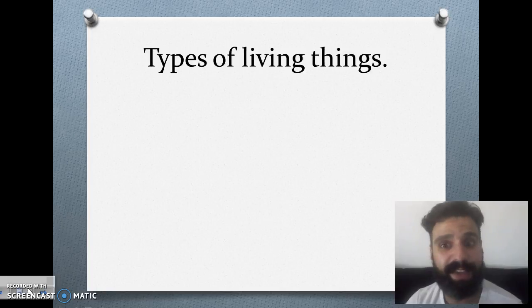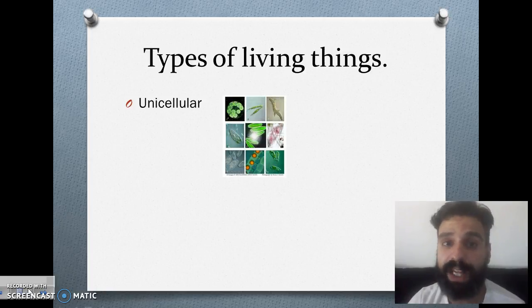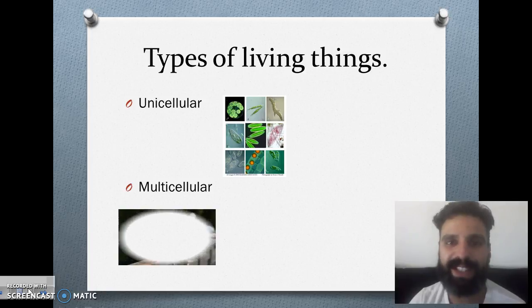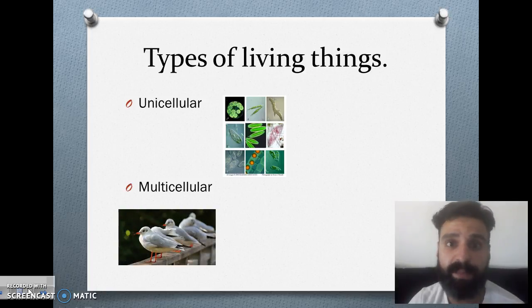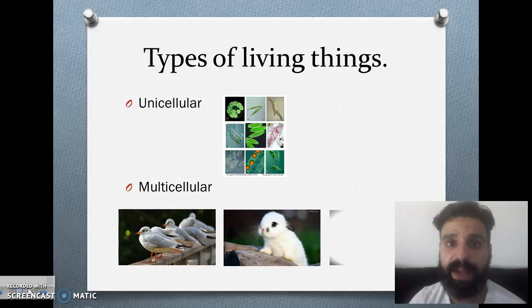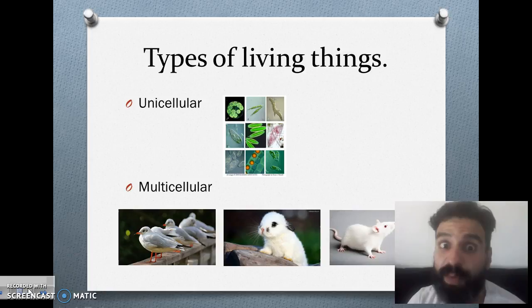According to types of living things, we have to talk about unicellular systems, they only have got one cell, and multicellular systems, they have got more than one cell. Some examples: birds, rabbits, mice, humans.